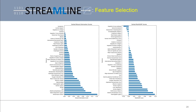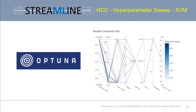From the feature importance estimation and feature selection component, we have ranked feature importance scores averaged over all training partitions. Results for the mutual information method are on the left, and results for the Multisurf method are on the right. Moving on to the modeling phase, the Optuna package facilitates the generation of parallel coordinate plots to visualize the results of a hyperparameter sweep — with different hyperparameters along the x-axis and possible values along the y, with darker blue lines indicating better average performance for specific combinations of hyperparameter values.